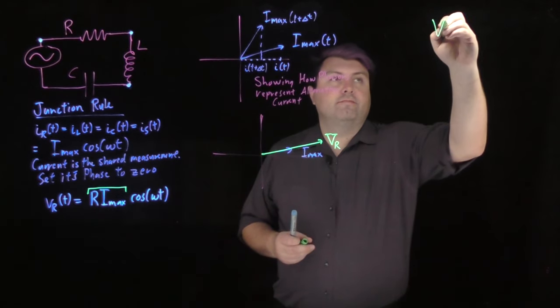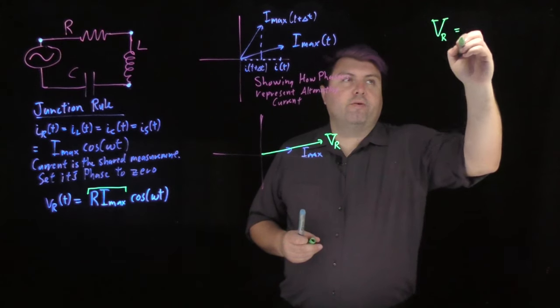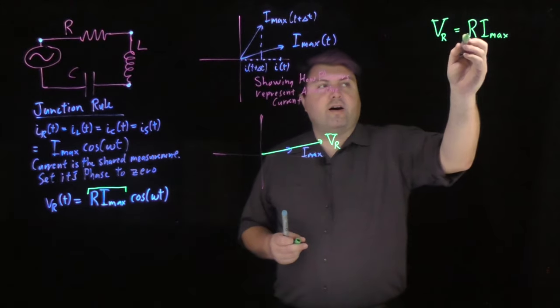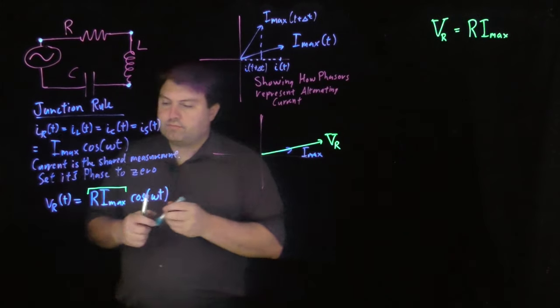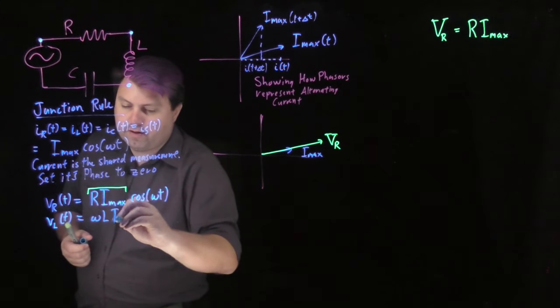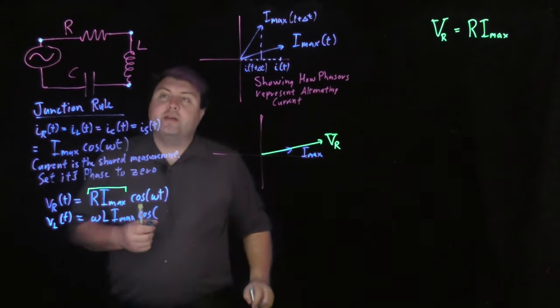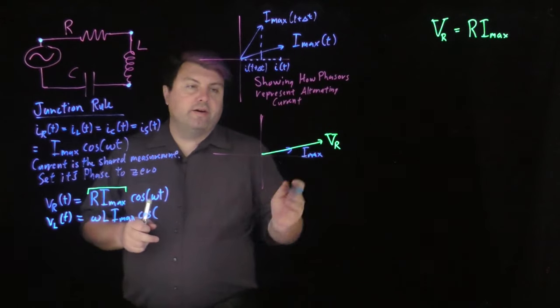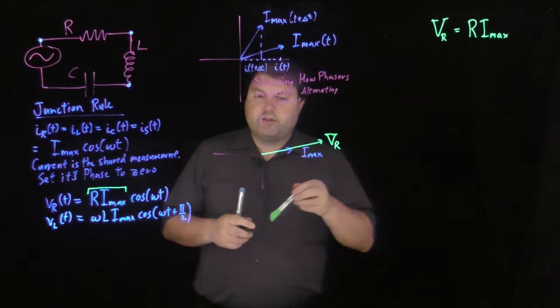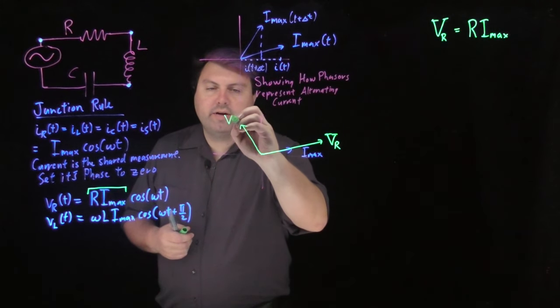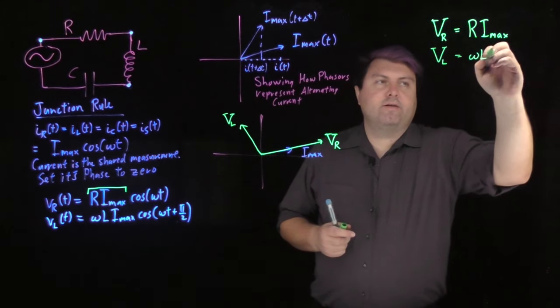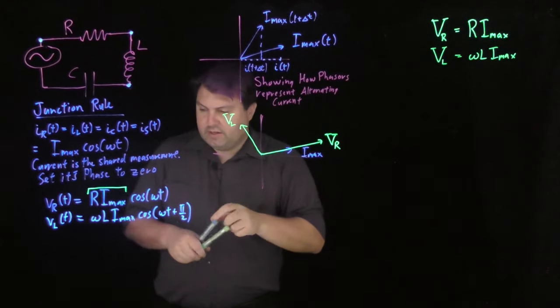And it's going to have a value of V sub R. So this value V sub R, and we're ignoring the max for right now just because it's too many subscripts. So this is a constant value. You can see R is constant, I_max is constant, and we have V sub R. We can do the same for V sub L as a function of time. That would be omega L I_max. And then the inductor is not in phase with the current. The voltage of an inductor is ahead by 90 degrees. So we can represent this by plus pi over 2. And so we can represent that as a value like this, V sub L. And so we have that V sub L maximum is omega L I_max.